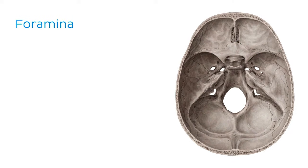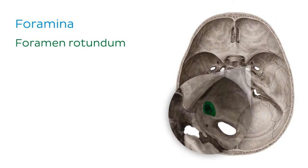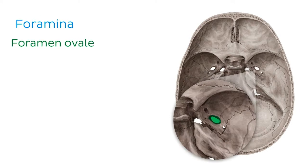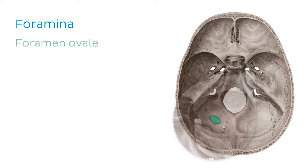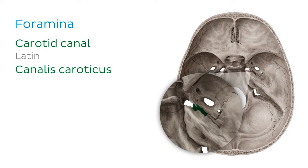Still in the middle cranial fossa, we can also find the foramen rotundum, where the maxillary nerve passes through; the foramen ovale, which is the opening for the mandibular nerve; and the carotid canal, which is the passage for the internal carotid artery.